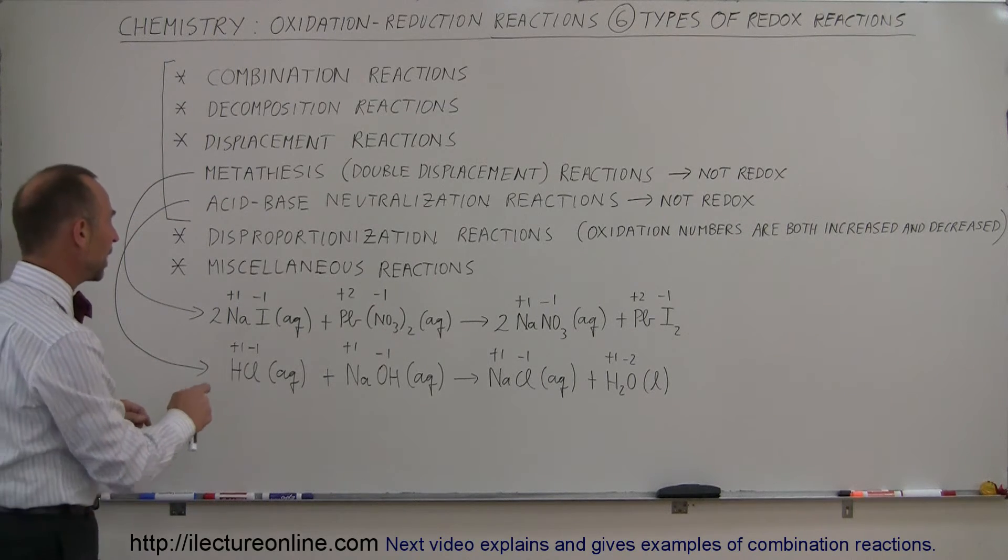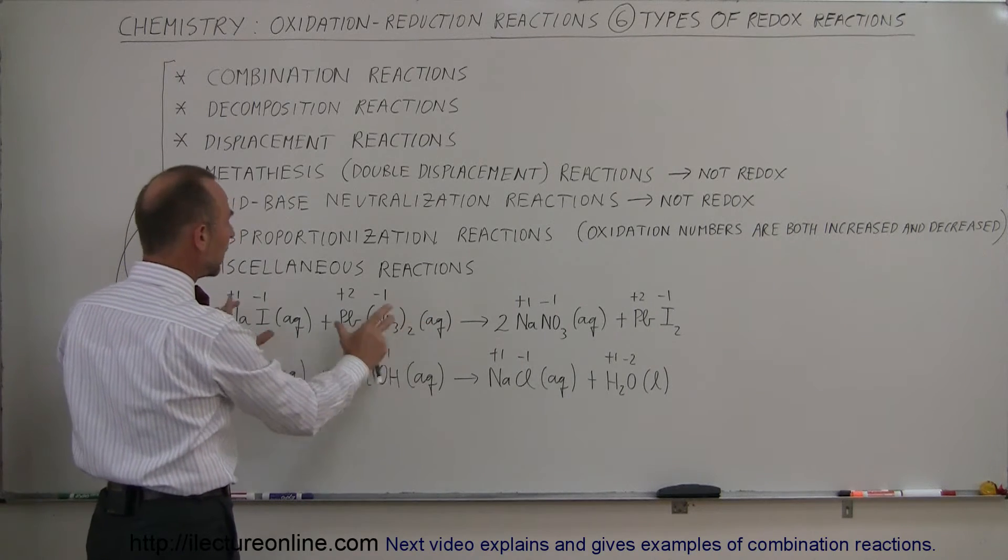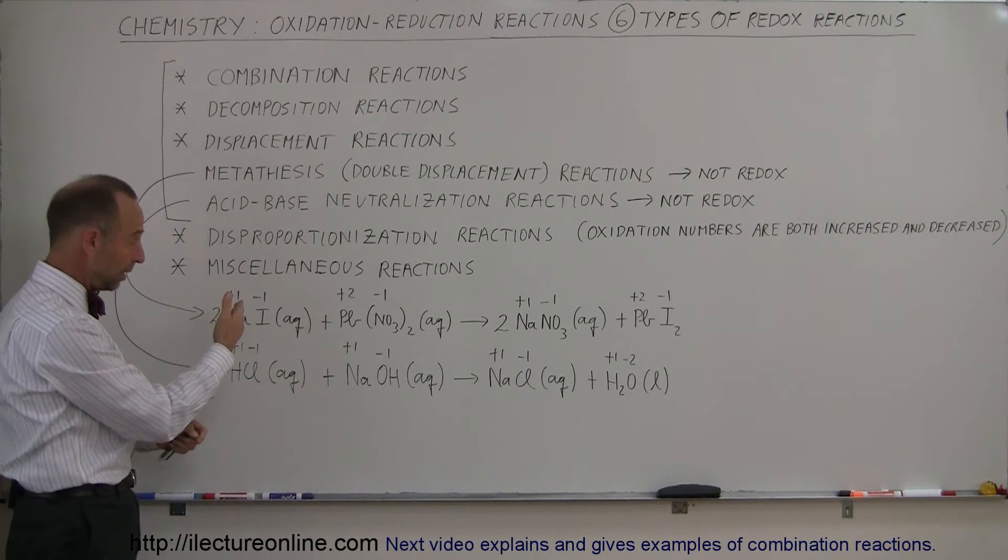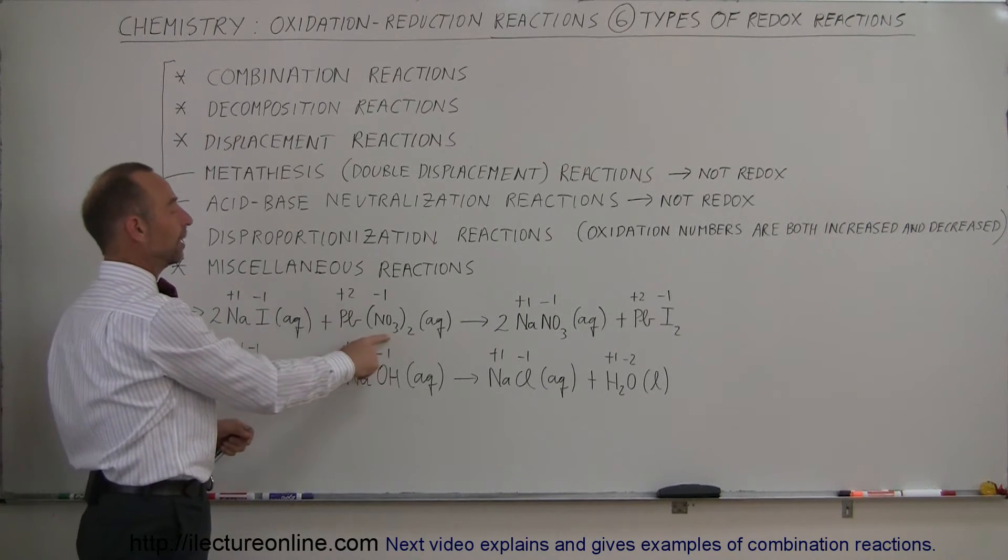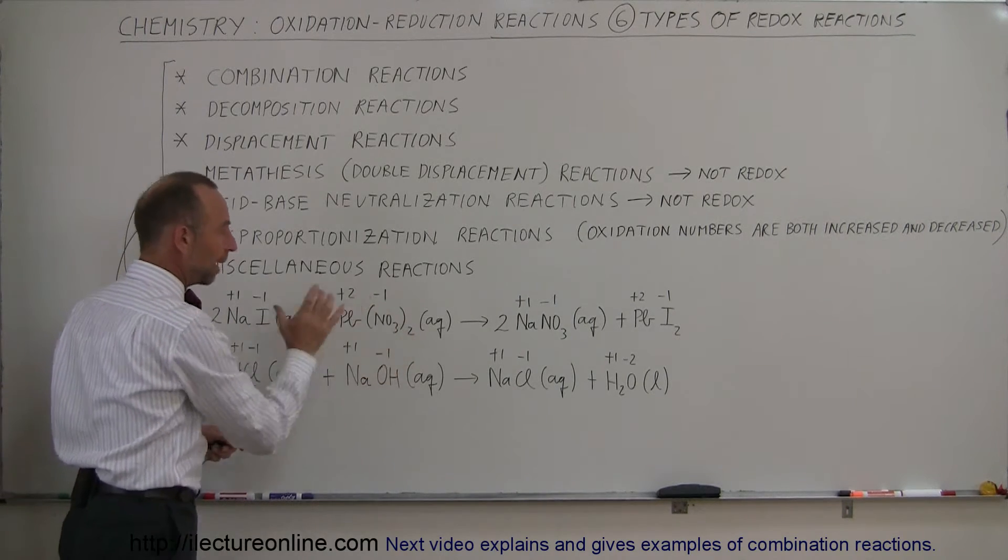Double displacement reaction. We have sodium iodide and lead nitrate, both in an aqueous solution. Notice that the oxidation number for sodium is going to be plus one, and for iodine it's going to be minus one. For lead, plus two. And for the nitrate ion, minus one. That's why you need two of them to balance out the lead.